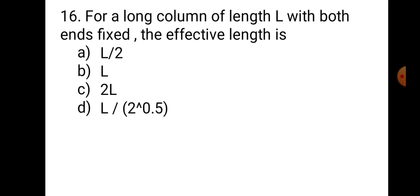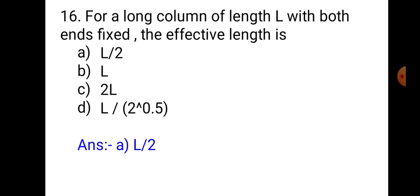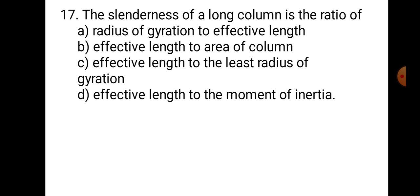Question number 16. For a long column of length L with both ends fixed, the effective length is: when both ends are fixed, the effective length is half the column length, that is L/2. Hence, the correct answer is A, L/2.